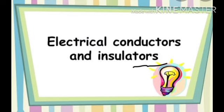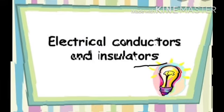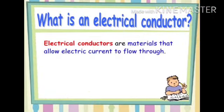Materials like rubber, polythene, and bakelite are called insulators or non-conductors of electricity. Electrical conductors are materials that allow electric current to flow through them. Copper, aluminum, and other metals permit electricity to flow through them, while substances like plastic and jute do not.